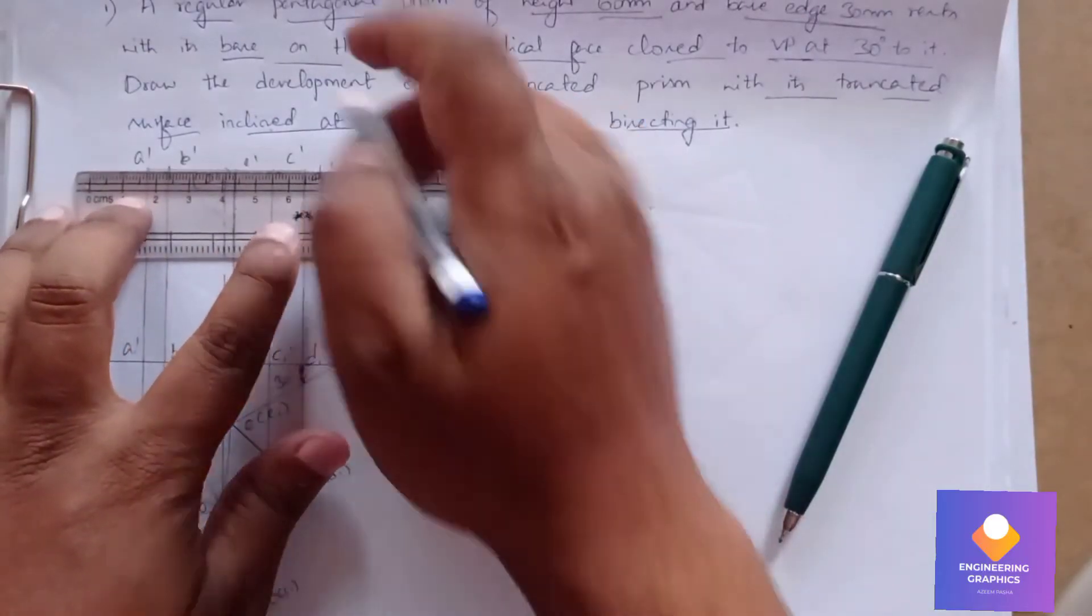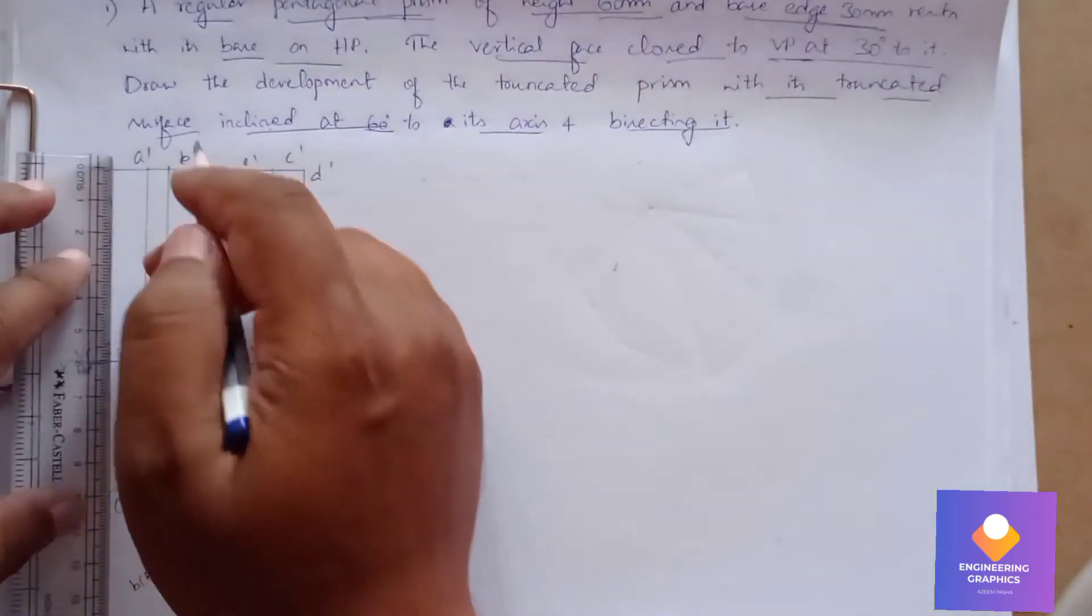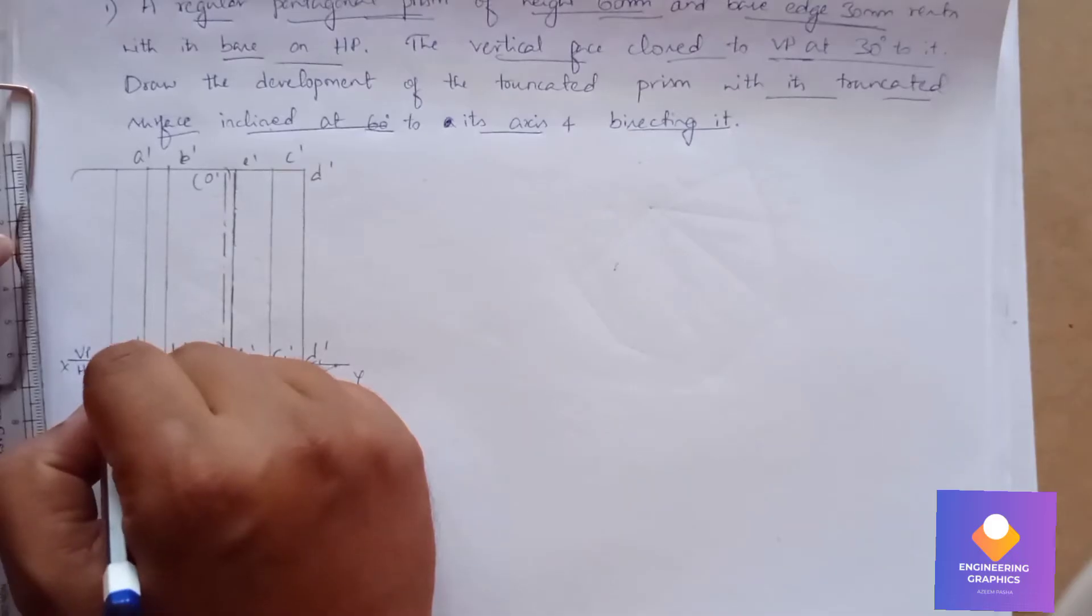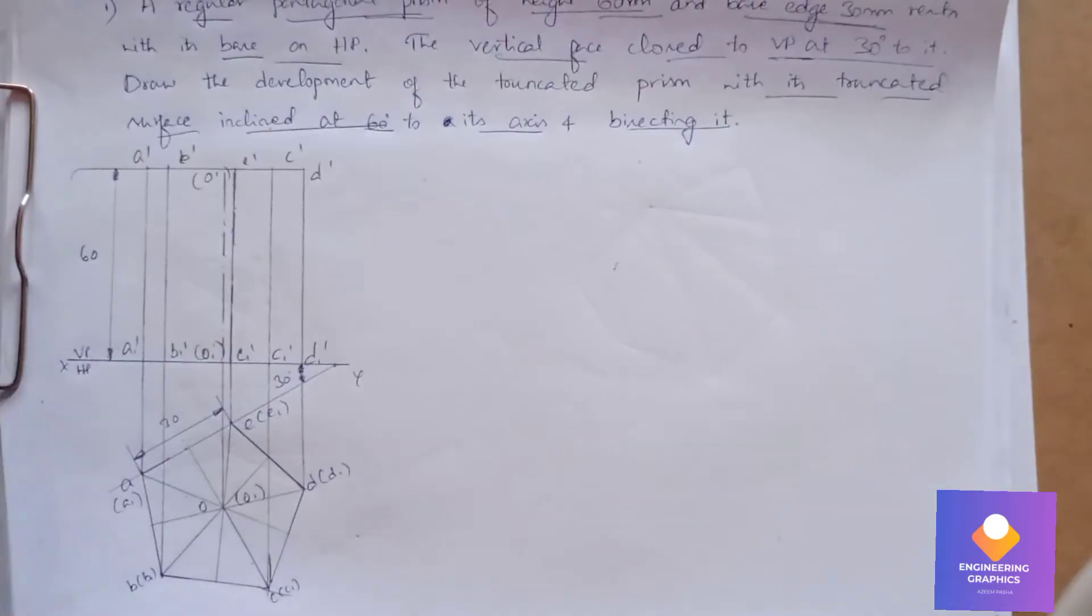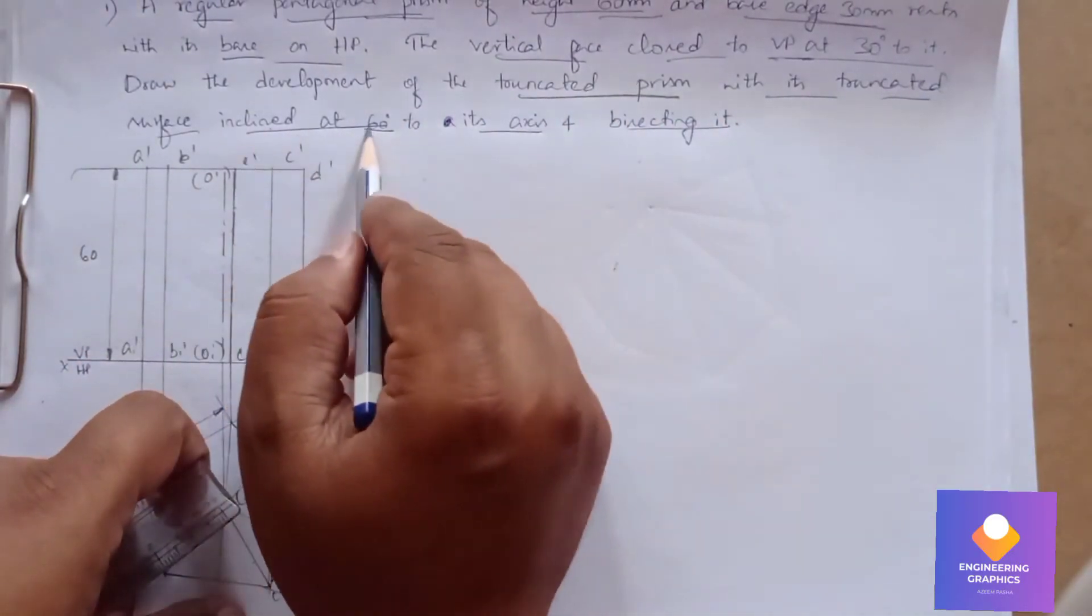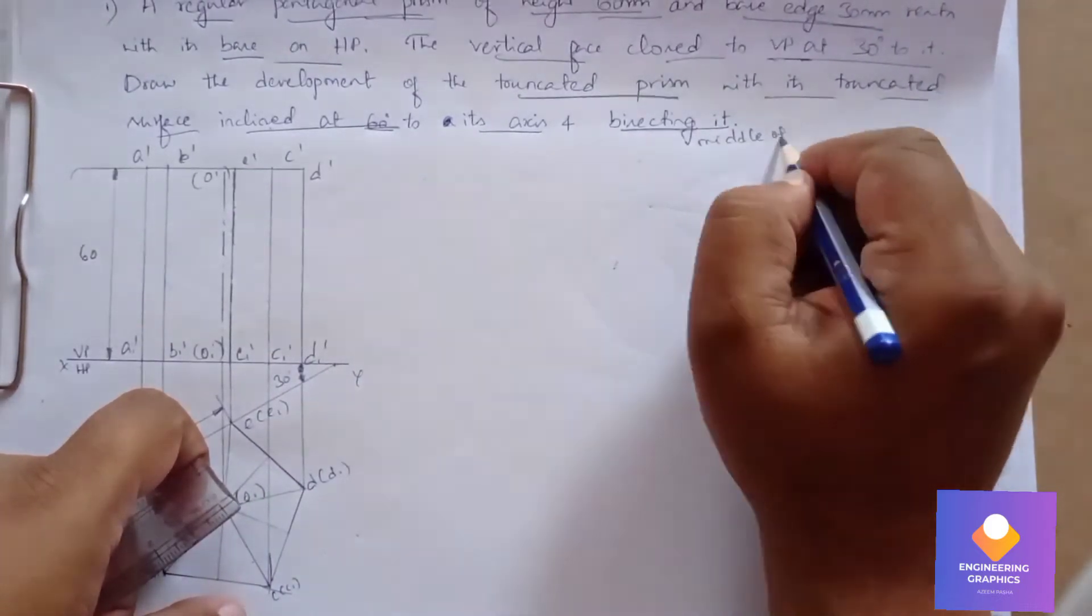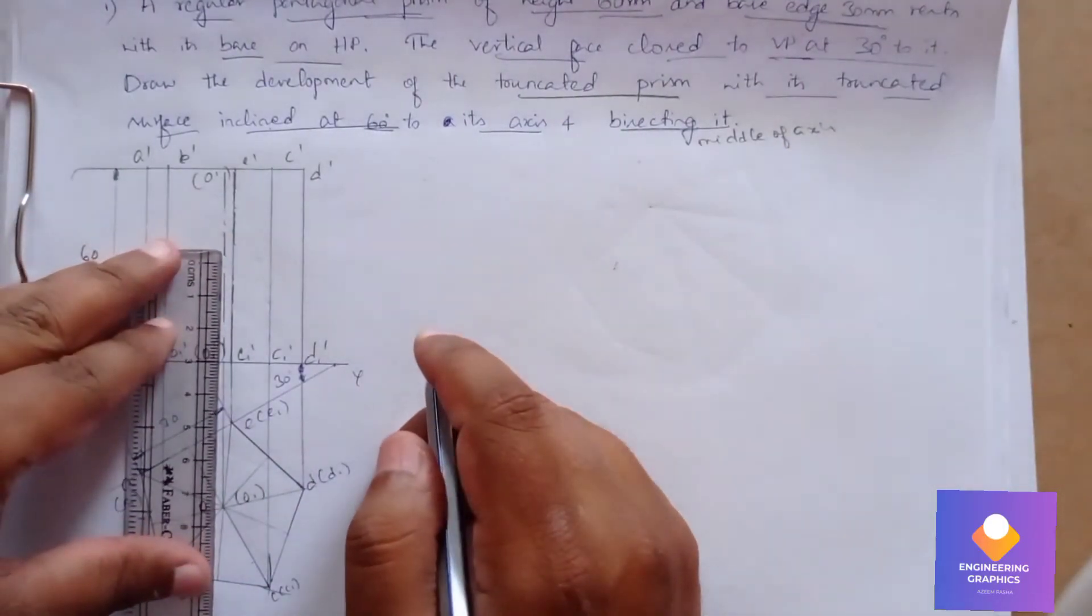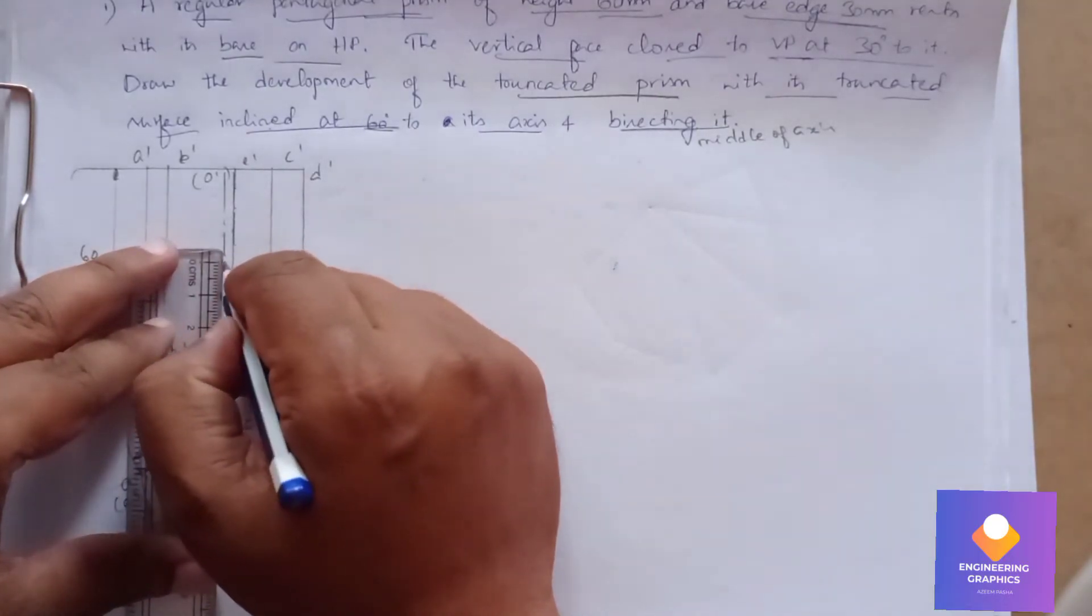Now we can show the dimension of 60mm. We have to consider the angle of inclination 60 degrees, exactly bisecting—exactly the middle point of the axis. If it is 60mm, we should consider 30mm exactly.